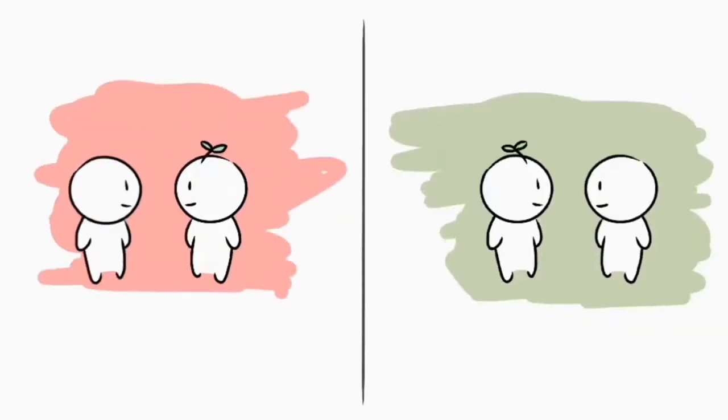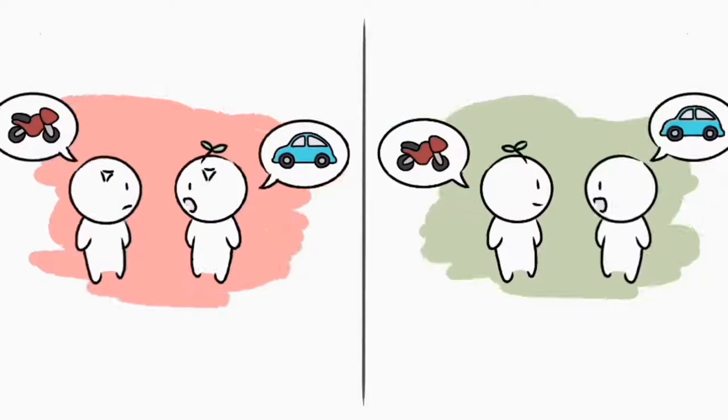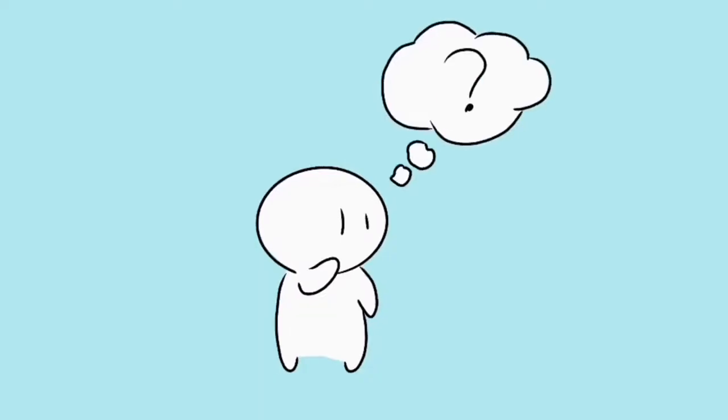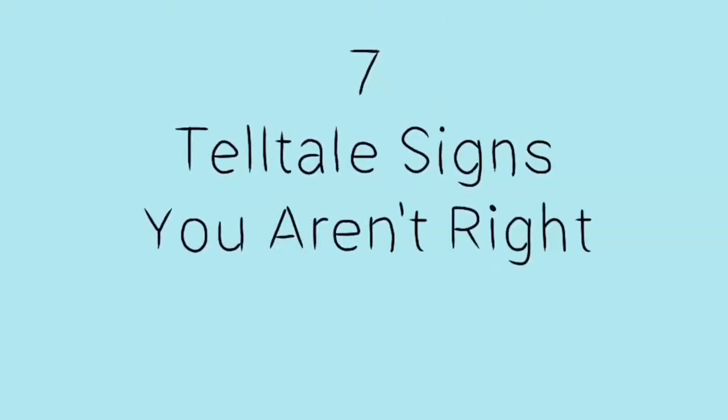However, it can be hard to differentiate normal differences from incompatibility. So, if you're wondering whether or not you and your significant other are incompatible, here are seven telltale signs that you probably aren't right for each other.